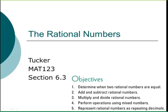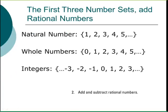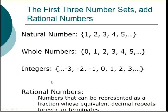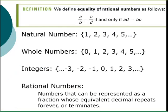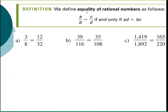In this lesson we're going to look at section 6.3, the rational numbers. We talked about the first three number sets in the last lesson — natural, whole, and integers — and now we're going to add almost everything in between. Those are rational numbers, and rational numbers are numbers that can be represented as a fraction whose equivalent decimal either repeats forever or terminates. Terminates means it ends, like 1.5, while repeats forever is like 1.333... with a line over it.